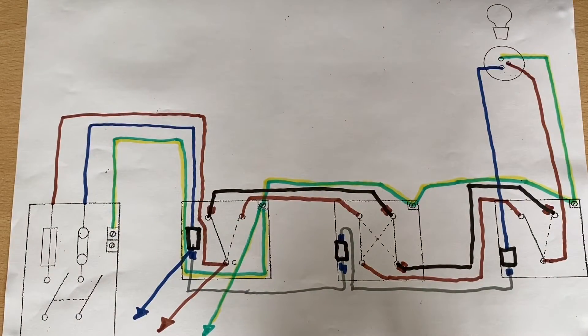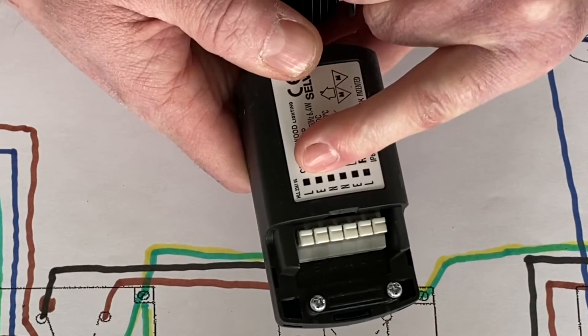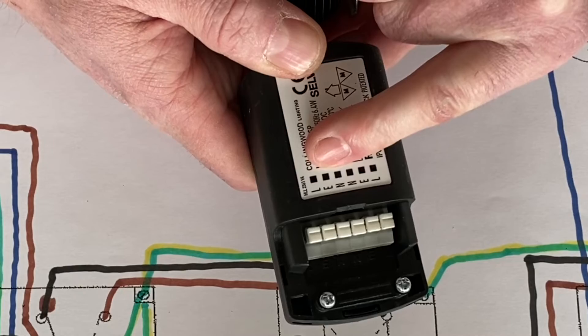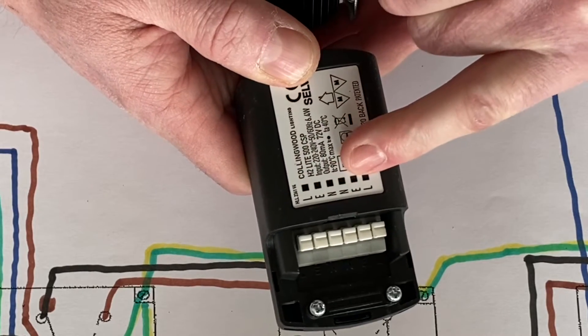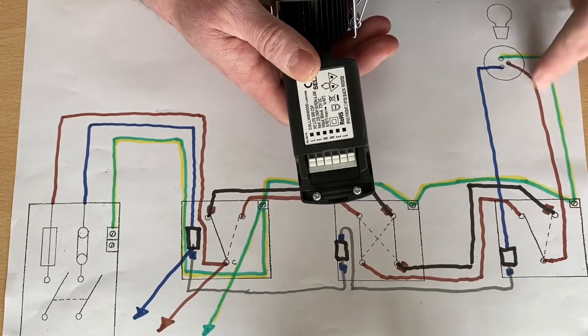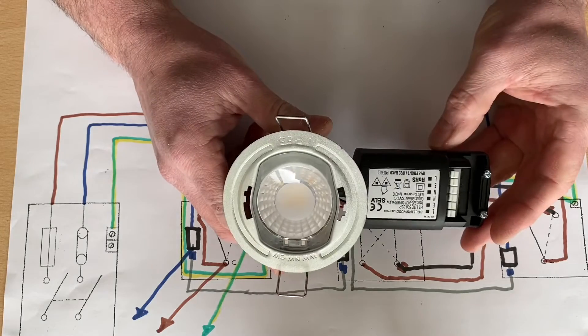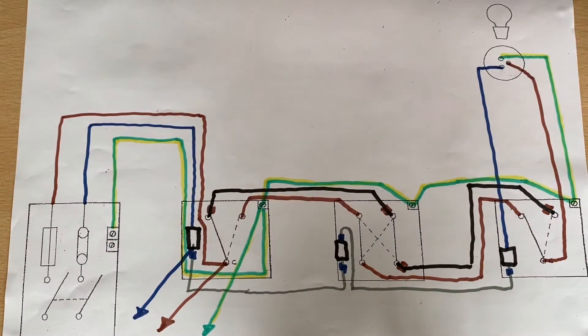Or we might be lucky enough to have a lighting point that actually has our connections. So we've got switching line, CPC neutral, and our connections go in there. In this case, we'd have these three in, and then we'd take another three off to feed another LED down light. So that's the process there.